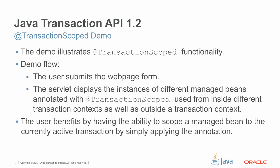The transaction scoped demo illustrates the @TransactionScoped annotation. The demo is very basic — it just has a web form that is submitted, and there are three tests that are run. The server will display the instances of different managed beans that are annotated with @TransactionScoped when they're used in different transaction contexts, as well as outside a transaction context. In that case, we will see that an exception is thrown because the transaction scoped managed bean is to only be used within a transactional context.